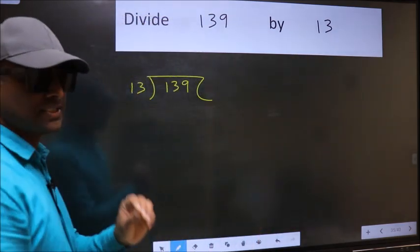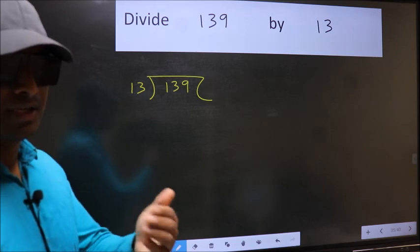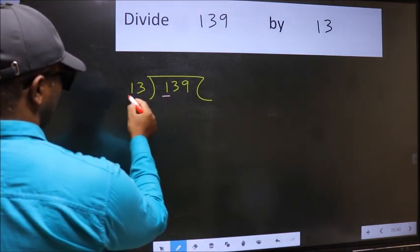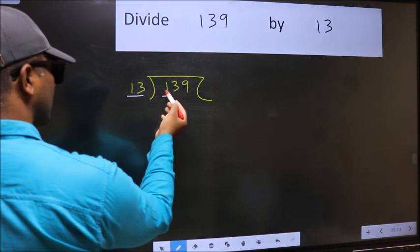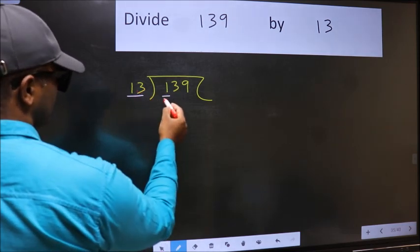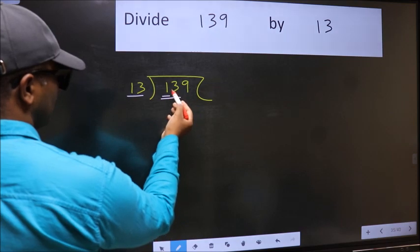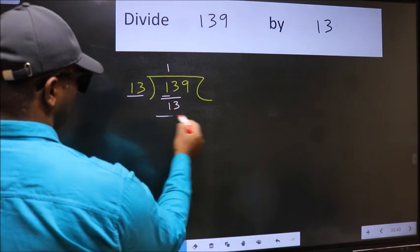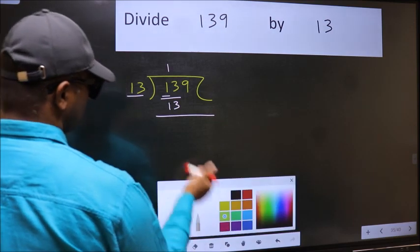This is your step 1. Next, here we have 1 and here 13. 1 is smaller than 13, so we should take two numbers: 13. When do we get 13 in the 13 table? 13 once is 13. Now we should subtract 13 minus 13, which equals 0.